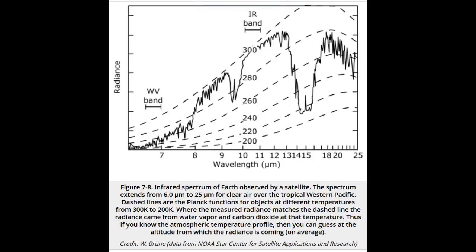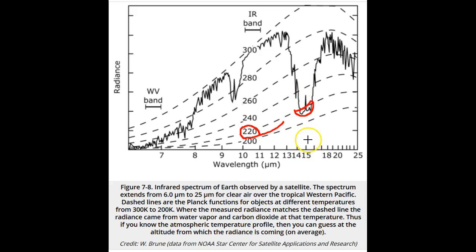In the CO2 absorption band near 15 microns, the radiance is equivalent to a temperature of 220 Kelvin, which is from CO2 near the tropopause, since this is the lowest radiating temperature that we see.